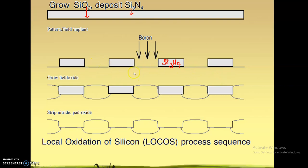In the exposed regions we implant with boron. The purpose of implanting with boron is to increase the doping of that region. Some portions are exposed and some are protected by the pad oxide and silicon nitride. The exposed regions are where we are going to insert the isolation material, and the protected regions — where the devices will be fabricated — are known as the active area.